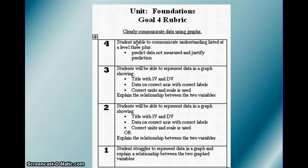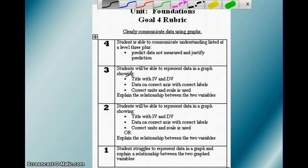Our goal here is to clearly communicate data using graphs. In order to meet this goal, students will be able to represent data in a graph. In that graph, you need to show your title with your independent and dependent variable in the title. Your data is on the correct axis with the correct labels. You have correct units and scale and you are able to explain the relationship between the two variables.